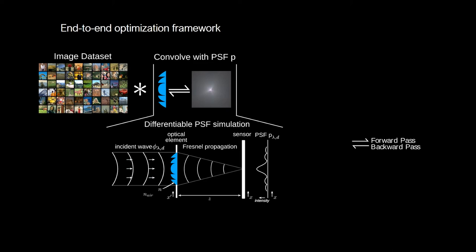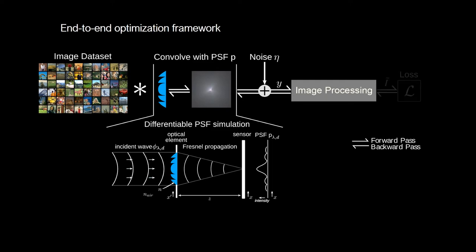Then we apply optimization-based image processing to reconstruct the image from the measurements. Finally, a loss is defined directly on the output of the image reconstruction algorithm. Gradients with respect to the loss are back-propagated all the way to the optical element.